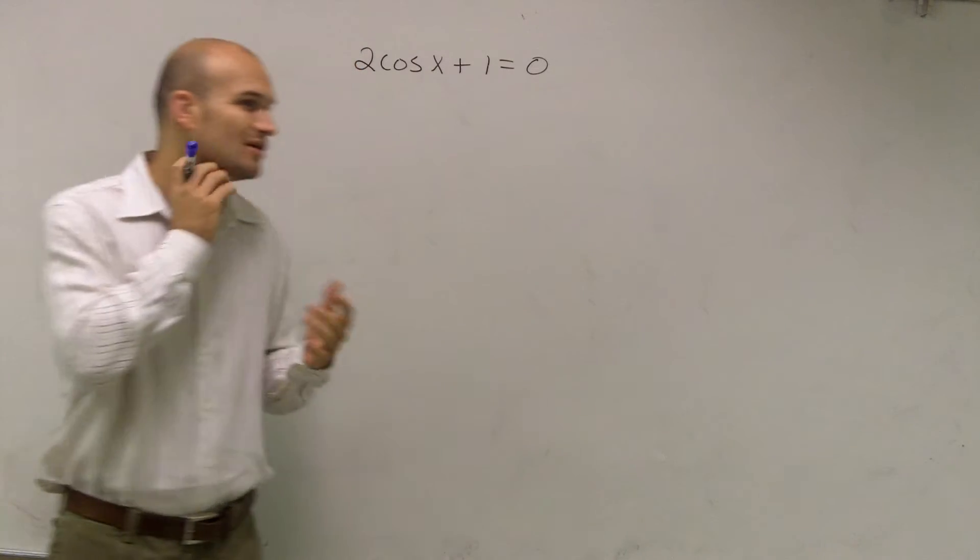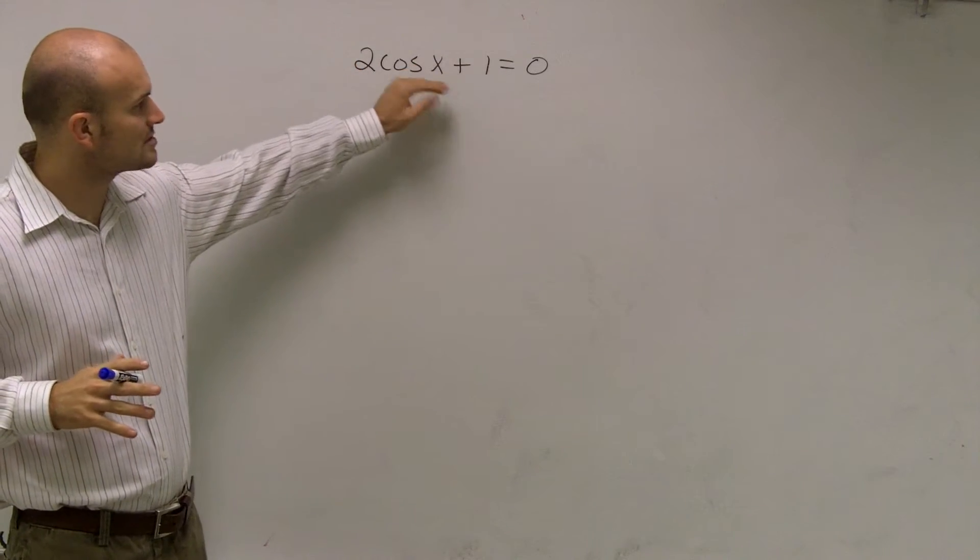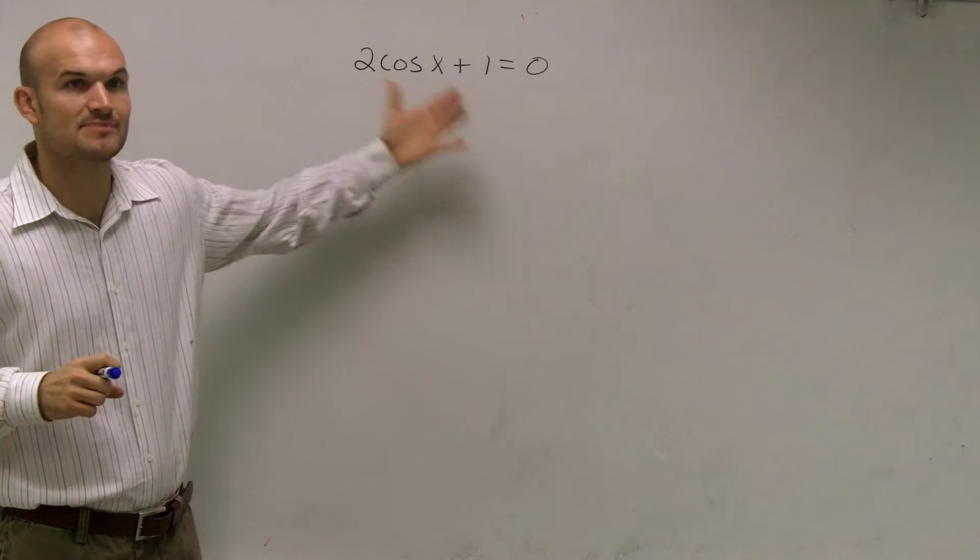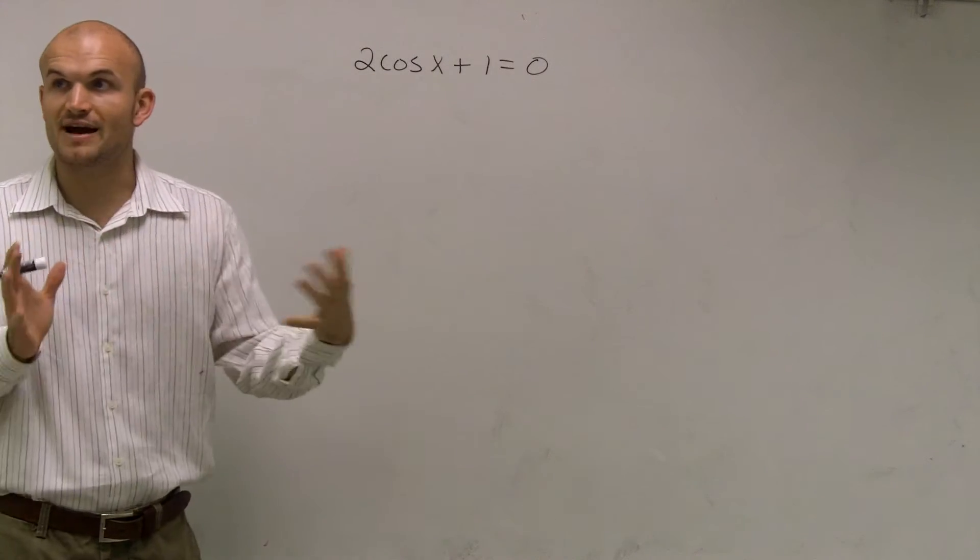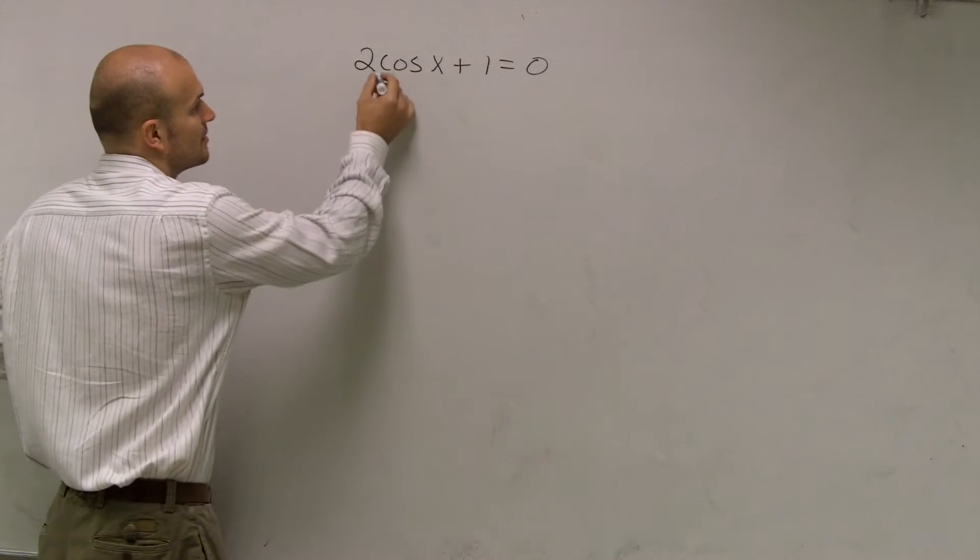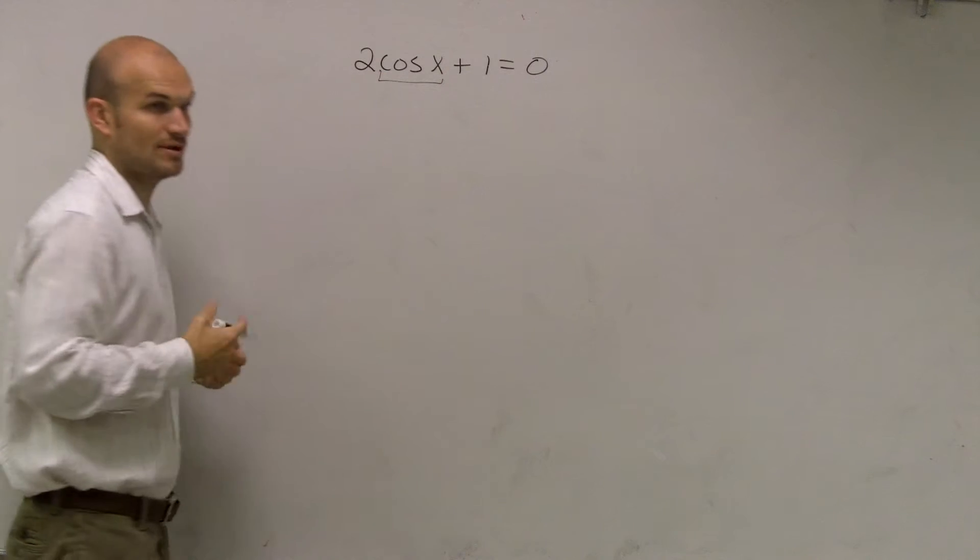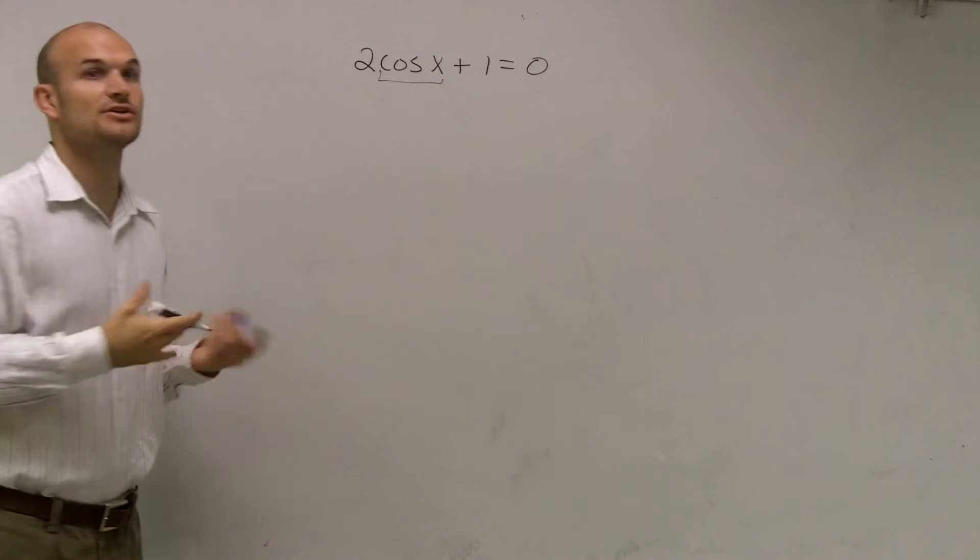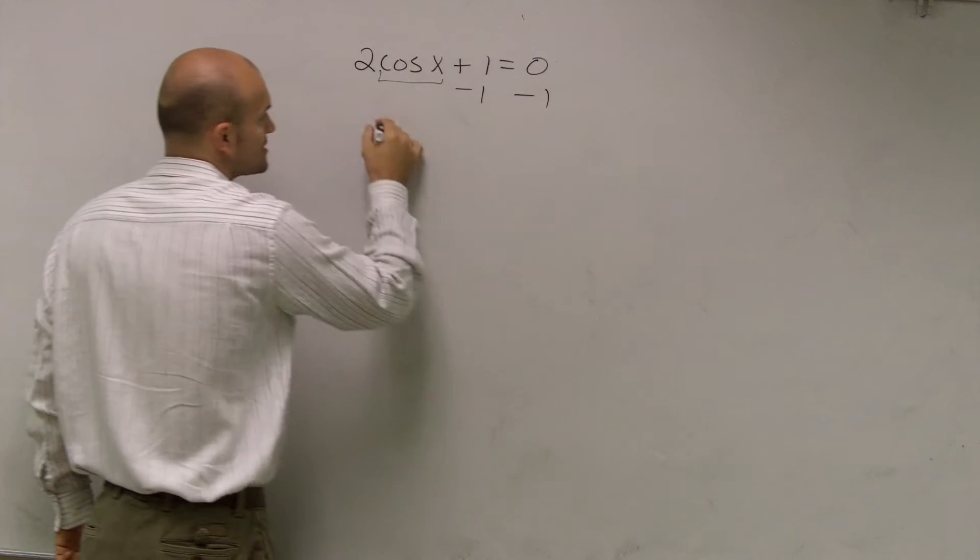Rather than doing a lot of simplifying techniques, simply what I'm going to do here is just get my cosine of x by itself, right? Because to find our values of x, I need to get this cosine of x by itself. So what I need to do is undo the operation that's happening to it. First thing we always undo is addition and subtraction, so I'll subtract the 1 on both sides.